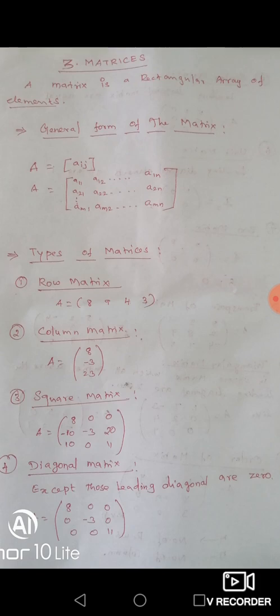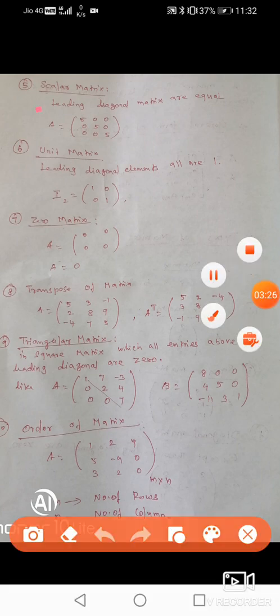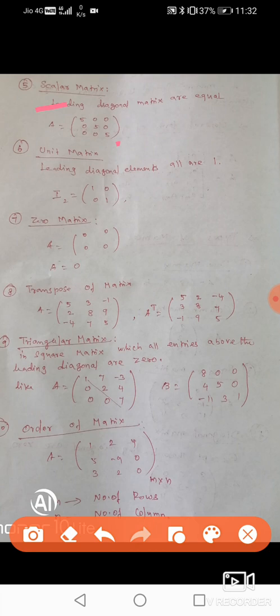Next: Scalar matrix. What is meant by a scalar matrix? The leading diagonal elements are all equal. Unit matrix: the leading diagonal elements are equal to 1. For I2, the matrix is [1, 0; 0, 1].